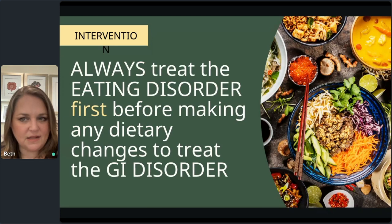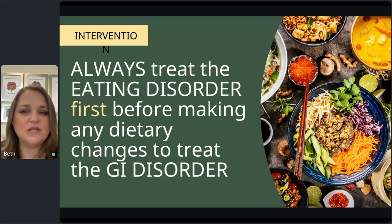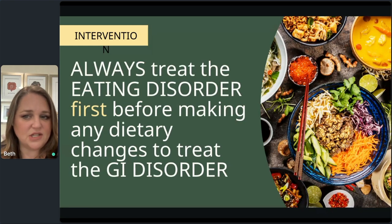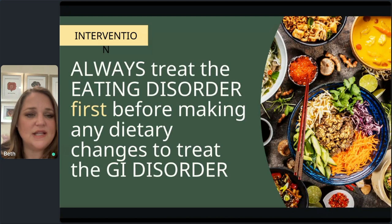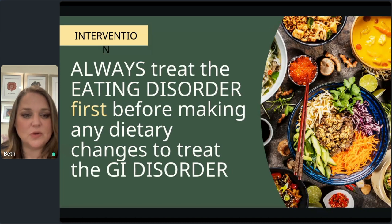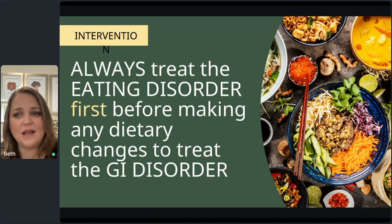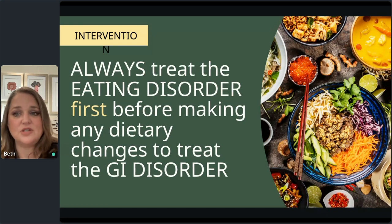As of 2015, the prevalence of disordered eating and eating disorders in patients with GI disease ranges between 5.3% and 44.4%, making it difficult to treat a GI condition when there's a coexisting eating disorder. If you take one thing away from today, it should be this: always treat the eating disorder first before making any dietary changes for the GI disorder. Treating someone with an eating disorder is truly a life-or-death situation requiring urgent support, but there are still things we can do without changing their diet.